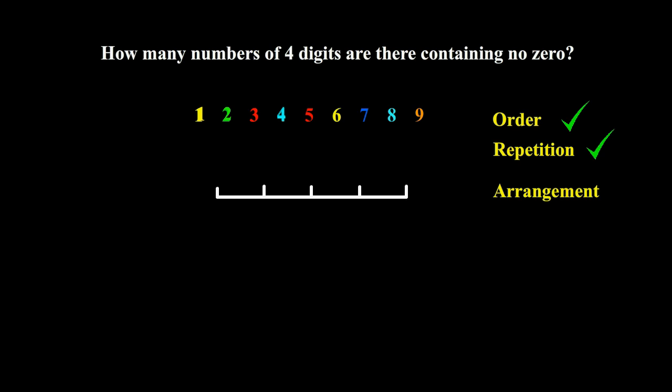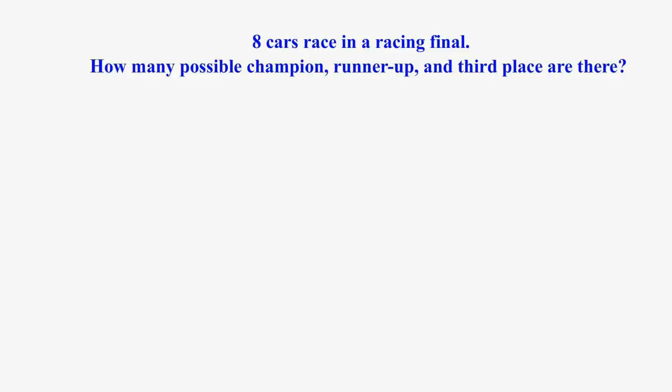There are nine possible digits for each of the four places. We multiply them and obtain nine to the power of four. This is the total number of four-digit numbers containing no zero.